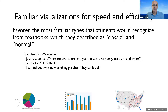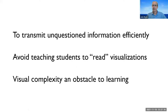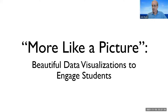Pie chart as 'old faithful' — a great characterization — and they eat it up. They also said, 'Is it terrible as it sounds? We don't have enough time to really break down everything. In class I need something where I can show them it and it can convey that information quickly — whereas I would probably have to explain that network graph for 10 minutes.' The ones that exemplified this category were the pie chart, bar chart, and the map. They favored the most familiar types that students recognize from textbooks — which they described as 'classic' and 'normal.' To recap: they focused on transmitting information, didn't question it, avoided teaching students to read visualizations, and viewed visual complexity as an obstacle to learning.